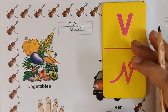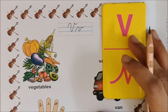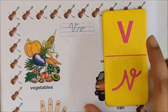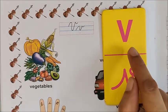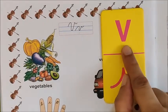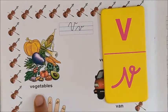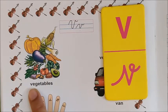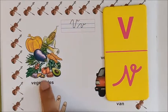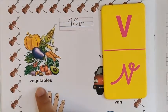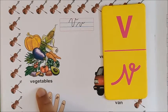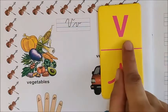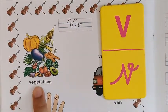Now let us look at all the pictures which begin with the letter V. Read after me children: V, V, vegetables. Children, look — we have all the vegetables here, so many vegetables. We must eat vegetables because they make us strong. So V, V, vegetables.